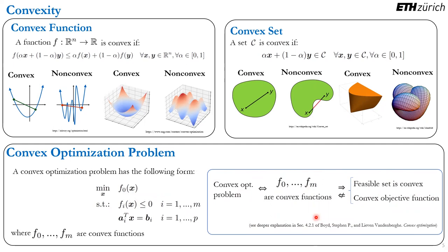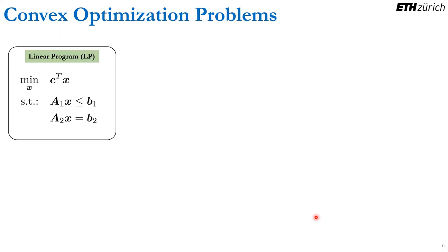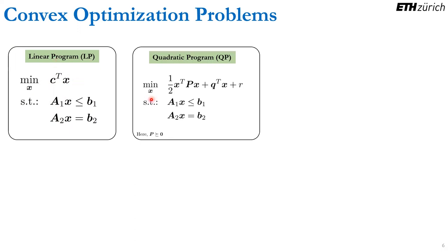Let's study different types of optimization problems, starting with the simplest one: a linear program. In a linear program, we minimize a linear function, c transpose x, subject to linear constraints — everything is linear. If we include a quadratic objective function, we get a quadratic program, QP. Here the matrix P must be positive semidefinite to ensure the objective is convex. If P is not positive semidefinite, the problem is not a convex quadratic program.